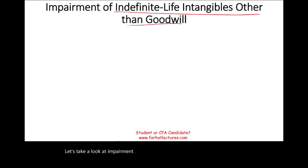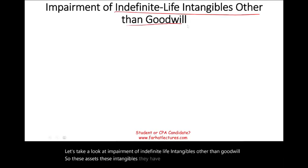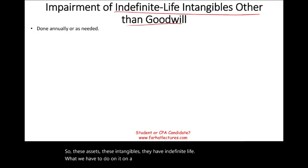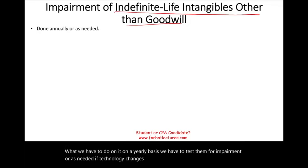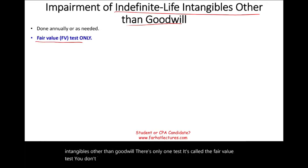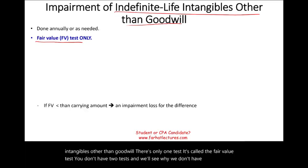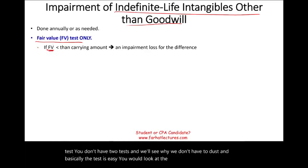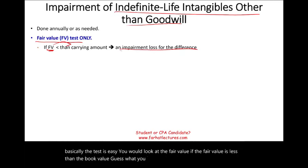Now let's look at impairment of indefinite life intangibles other than goodwill. These intangibles must be tested for impairment on a yearly basis, or as needed if technology changes. The good news: there is only one test — the fair value test. If the fair value is less than the book value, you have an impairment loss for the difference.